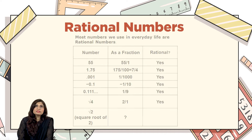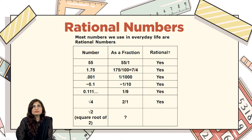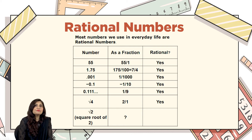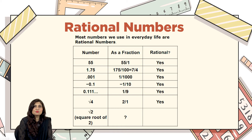For better understanding of rational numbers, look at this table. The number 55 — as explained, all whole numbers can be written as a fraction, so 55 can be written as 55/1, and yes, it is a rational number. The decimal number 1.75 has the fraction form 175/100, and yes it's also a rational number. Similarly, 0.001 can be written as 1/1000, and yes it's a rational number.